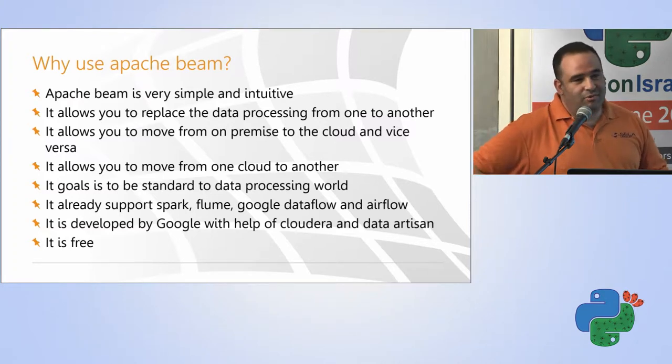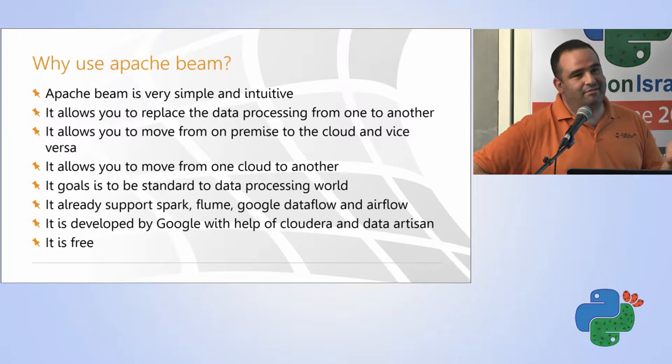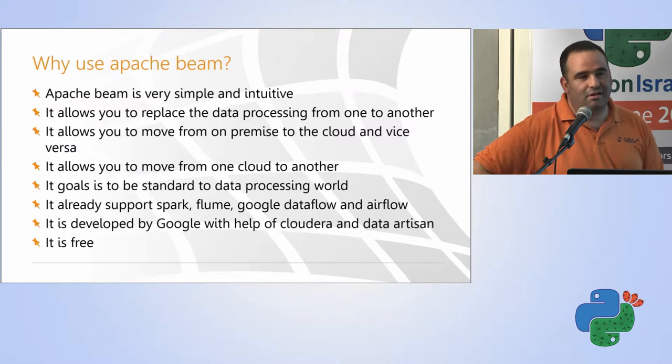And it also will help me move from on-premise to the cloud or vice versa because now I can write, use the direct runner. In a few seconds we will see it. We can use the direct runner and run things on-premise and using other runners that are usually working in the cloud like Google Cloud Dataflow or any others. And my code will be the same and the logic will be the same.